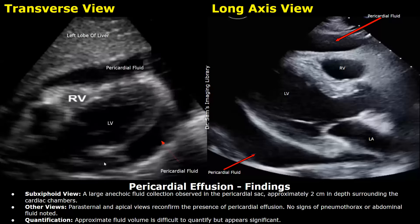Findings: Sub-xiphoid view — a large anechoic fluid collection observed in the pericardial sac, approximately two centimeters in depth, surrounding the cardiac chambers. Other views: parasternal and apical views reconfirm the presence of pericardial effusion. No signs of pneumothorax or abdominal fluid noted. Quantification: approximate fluid volume is difficult to quantify but appears significant.